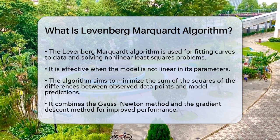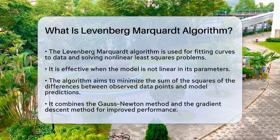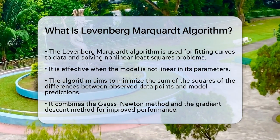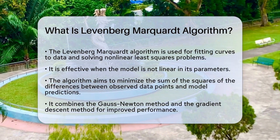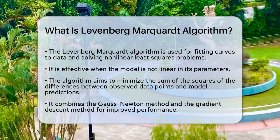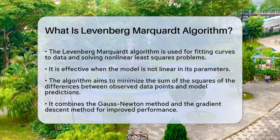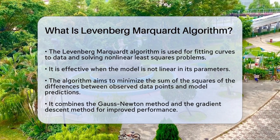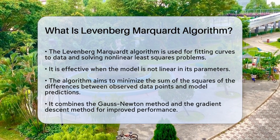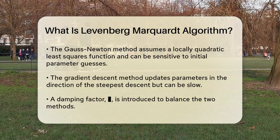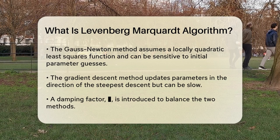The Levenberg-Marquardt algorithm is a powerful tool used in mathematics and computing to solve nonlinear least squares problems. These problems arise when you need to fit a model to a set of data points, and the model is not linear in its parameters. For example, if you have a set of points and you want to find the best curve that fits these points, this algorithm can help. It finds the parameters of this curve that minimize the sum of the squares of the differences between the observed data points and the predicted points from the curve.